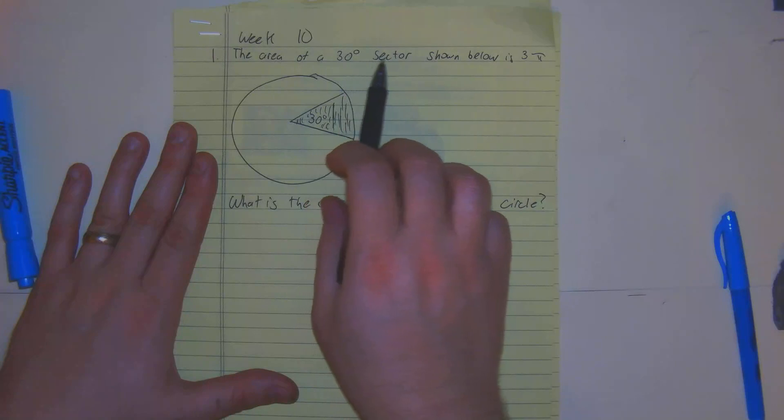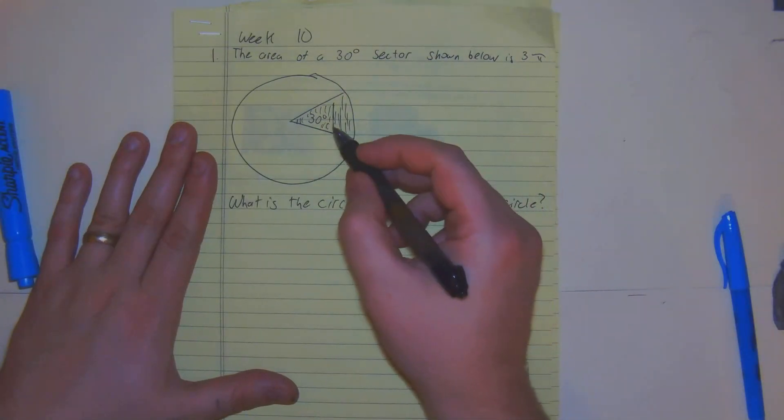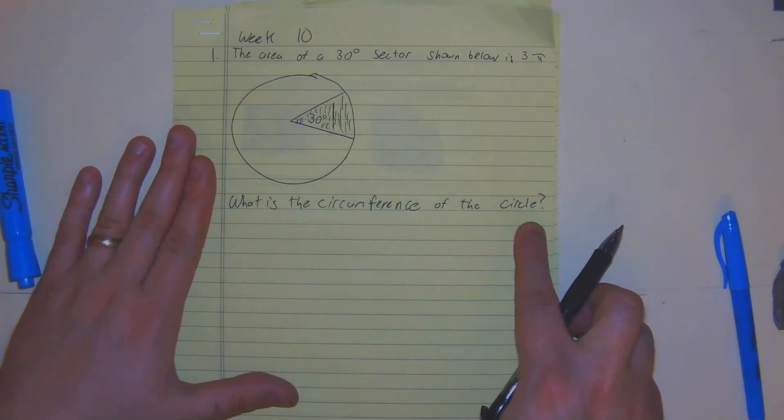The area of a 30 degree sector shown below is 3 pi. What is the circumference of the circle?